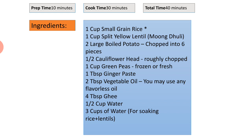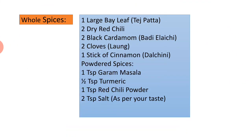Half a cauliflower head, roughly chopped, one cup green peas (frozen or fresh), one tablespoon ginger paste, two tablespoons vegetable oil (any flavorless oil), four tablespoons ghee, half cup water, and two cups of water for soaking rice and lentils.